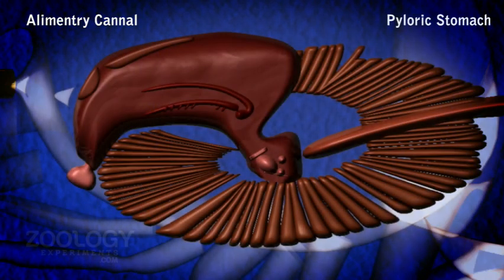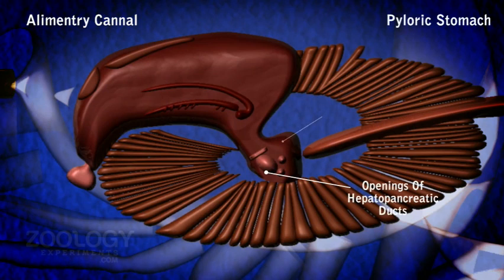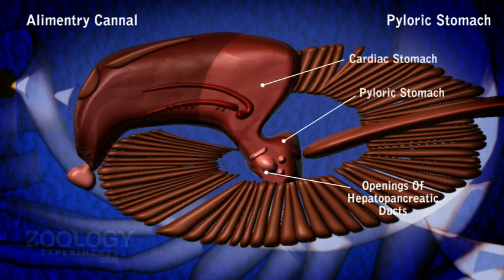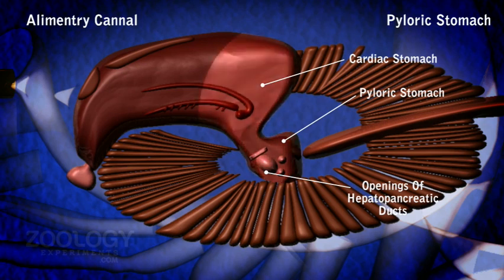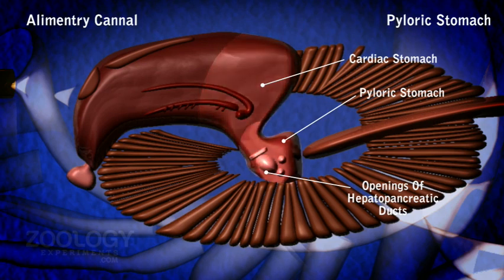Pyloric stomach. The pyloric stomach is a small and narrow chamber lying below the posterior end of the cardiac stomach. Its lateral walls are thick, muscular, and prominently folded inwards so that its cavity is imperfectly divided into a big ventral chamber and a small dorsal chamber.